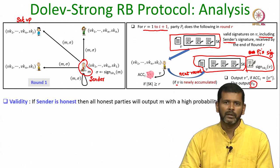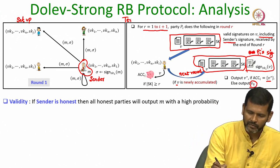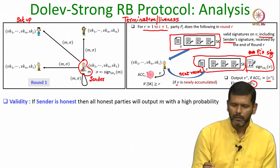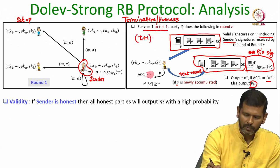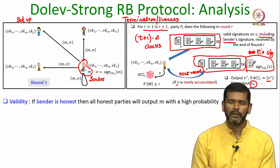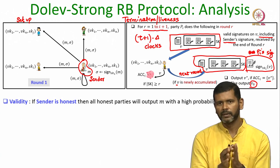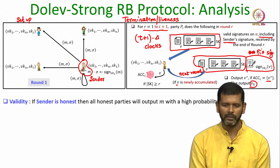Now we want to prove the termination, validity, and consistency property. The termination or liveness guarantee is very trivial to argue. The protocol takes only t plus 1 rounds, and assuming every round takes delta clock cycles, after t plus 1 times delta clocks every party will output something — either a default value or some value depending upon the contents of their accumulative set. So termination or liveness is trivial.